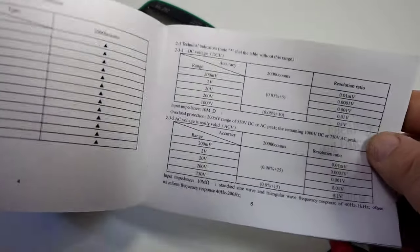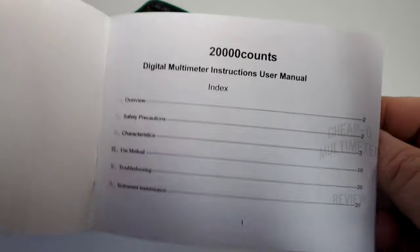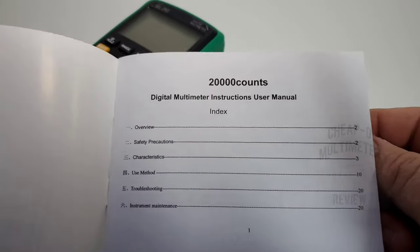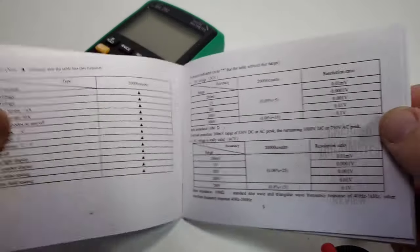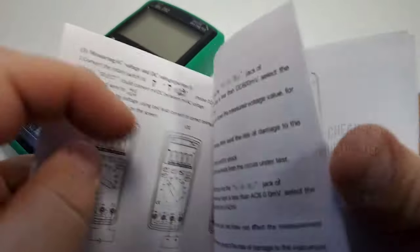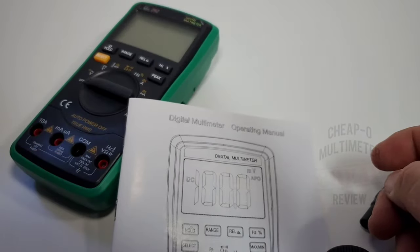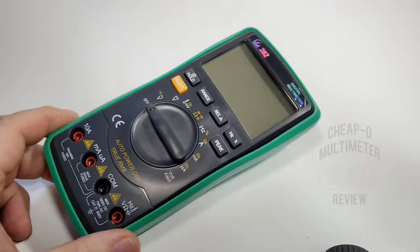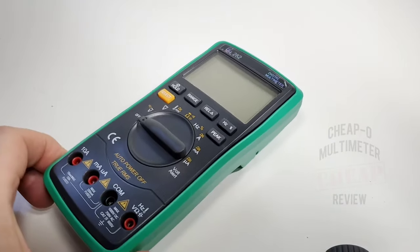The manual, the multimeter manual itself, is actually a little better than your normal pamphlet that comes with most cheapos today. Here we go, 20,000 counts, boom, right from the get-go. It's got all of our ranges here, has a little bit of specs and specifications. All in all pretty decent English isn't bad, and not too bad for a cheapie.